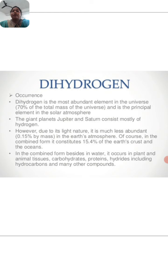Now dihydrogen occurrence. Dihydrogen is the most abundant element in the universe, 70 percent of the total mass of the universe, and is the principal element in the solar atmosphere. The giant planets Jupiter and Saturn consist mostly of hydrogen. However, due to its light nature, it is very less abundant, 0.15 percent by mass, in the earth atmosphere. In combined form it constitutes 15.4 percent of the earth's crust and oceans. In combined form, besides in water, it occurs in plant and animal tissue, carbohydrates, proteins, hydrides including hydrocarbons and many other compounds.